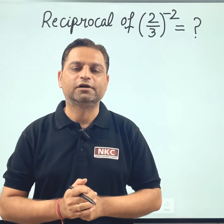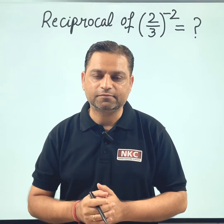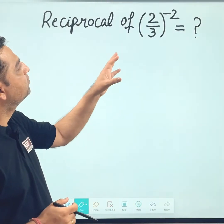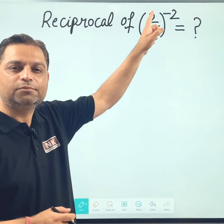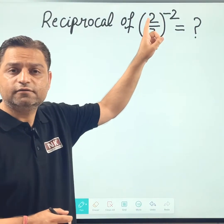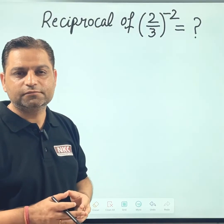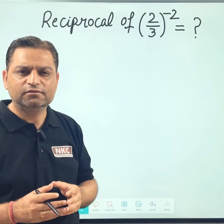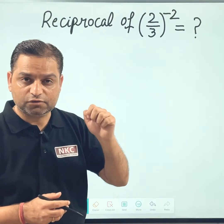Hello friends, welcome to Nankishore classes. Today's lecture is going to be very interesting. You can see the question: reciprocal of 2 upon 3 to the power minus 2. Here the exponent is negative and we need to write its reciprocal. Many students make mistakes here. We are going to do this question for the clarification of concept.